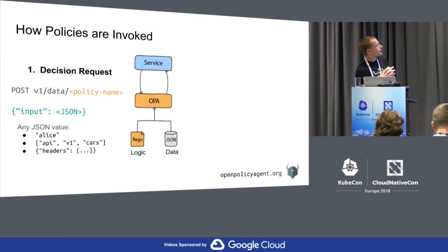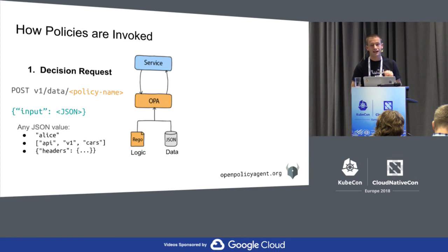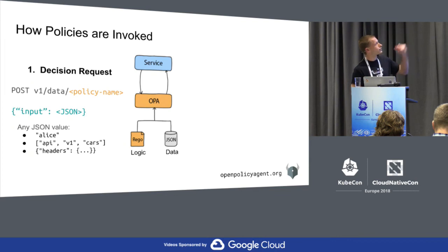So how are policies invoked? Once a system has been integrated with OPA, the service — whatever we were talking about: Kubernetes, Linux, whatever — every time it needs an authorization or policy decision, it asks OPA for that decision. OPA has an HTTP server built into it. Architecturally, what we want is OPA running on the same server as the service you're integrating with. The reason that's important is we want to guarantee that for authorization and policy decisions, that service can always get policy decisions in a highly performant, highly available way. Authorization is one of those key functionalities where if you suddenly cannot get authorization decisions, that service becomes a brick — it does not know what to do.